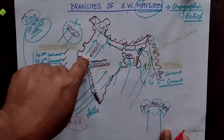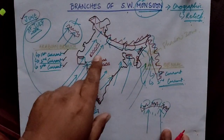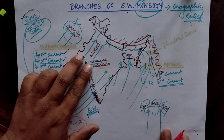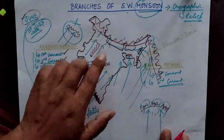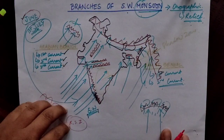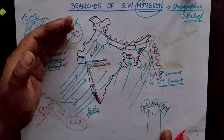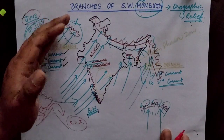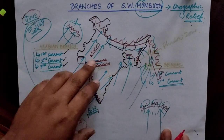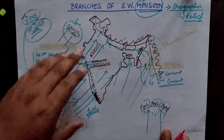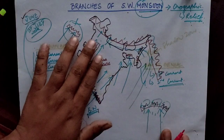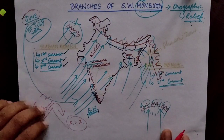Why does the third current not bring rainfall to Rajasthan? It is because of the Aravalli mountains, which are oriented vertically — making winds move parallel to them rather than being blocked. If the Aravallis had been oriented horizontally, the winds would have been checked and rainfall would have occurred in Rajasthan, possibly making Punjab and Haryana desert regions. But since the Aravallis run vertically, the current moves parallel to them.